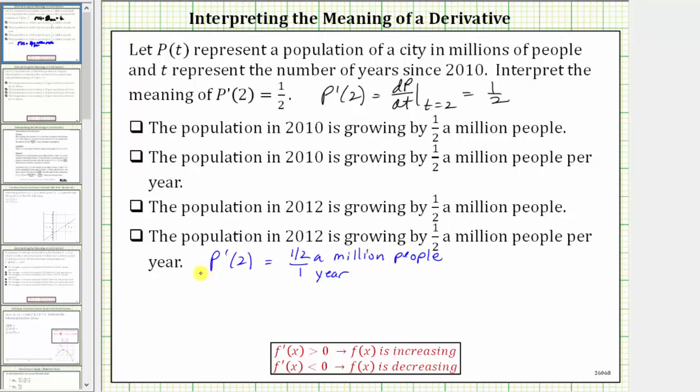The last step is to interpret the meaning of t equals 2. Remember, t is the number of years since 2010, and therefore t equals 2 corresponds to the year 2010, the base year, plus the t value of 2. So 2010 plus 2 equals 2012.